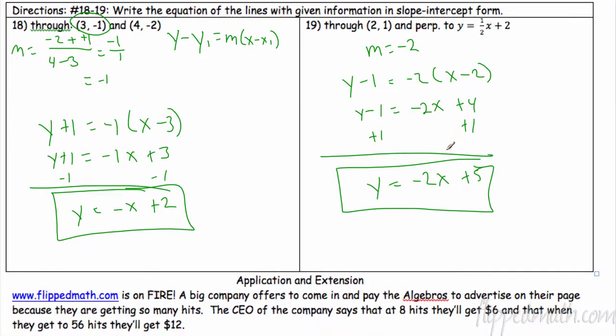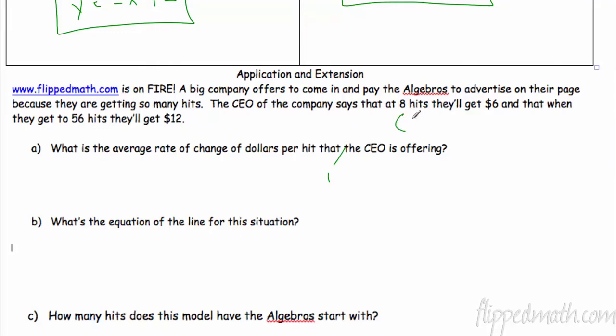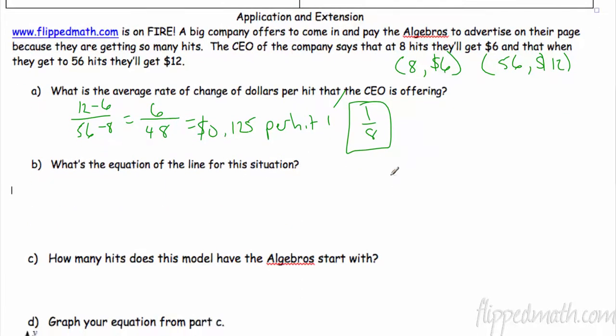Flipmat.com is on fire. Big company wants to come in and pay the Algebros. They say they can get 8 hits for 8 hits, they get $6. But for 56 hits, they only get $12. That's not as good. All right, so what's the average rate of change? So that's slope. So 12 minus 6, 56 minus 8. Now remember, when you have a rate of change, it can be in terms of either a fraction or a decimal. A lot of times we have decimals because they're more real-world problems, but you can always convert it back. So this is 0.125 dollars per hit.